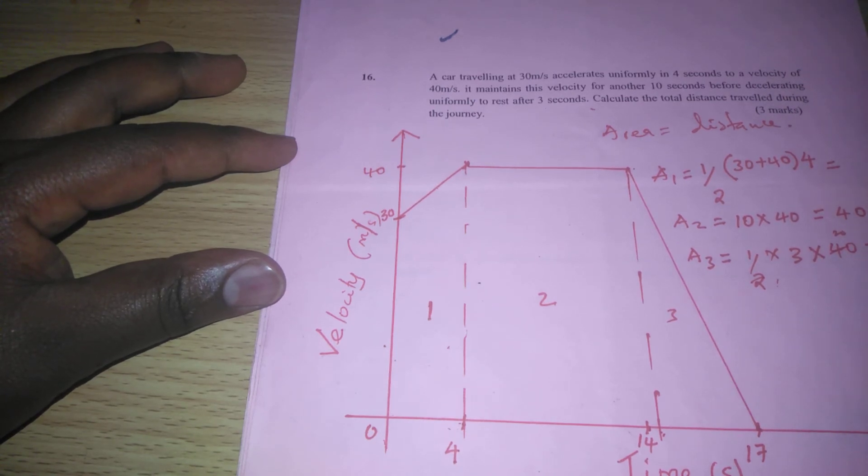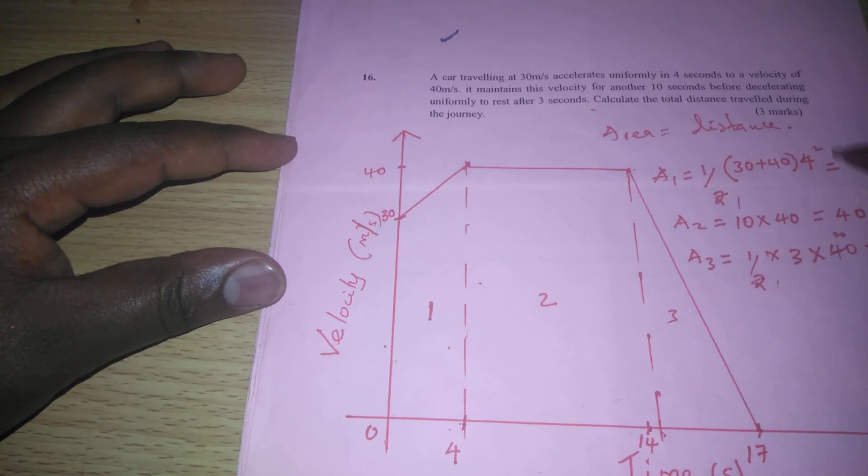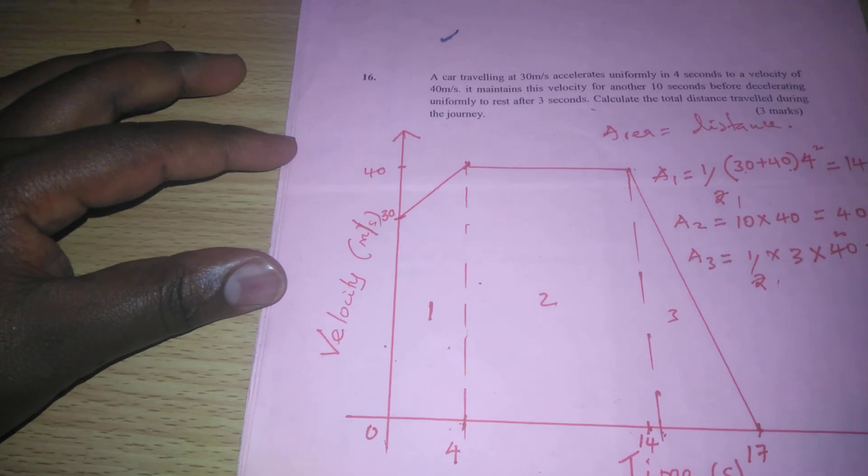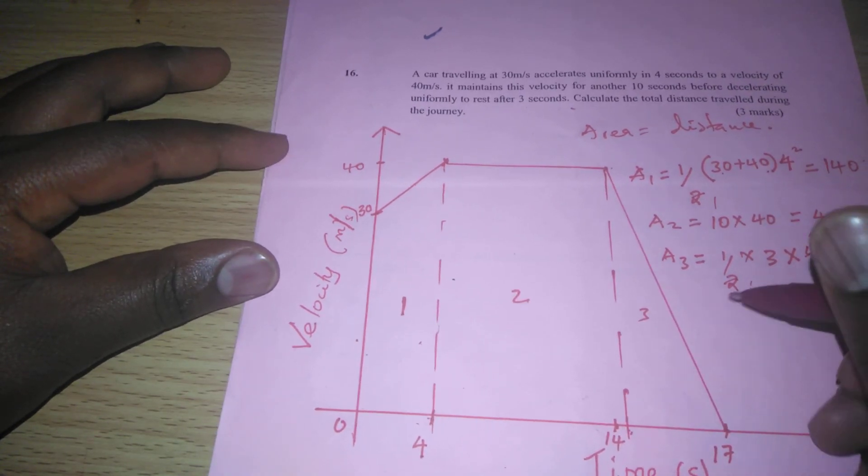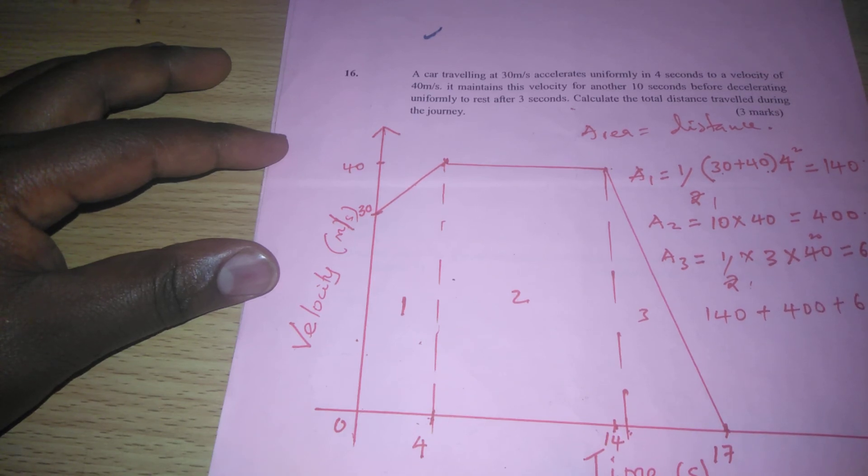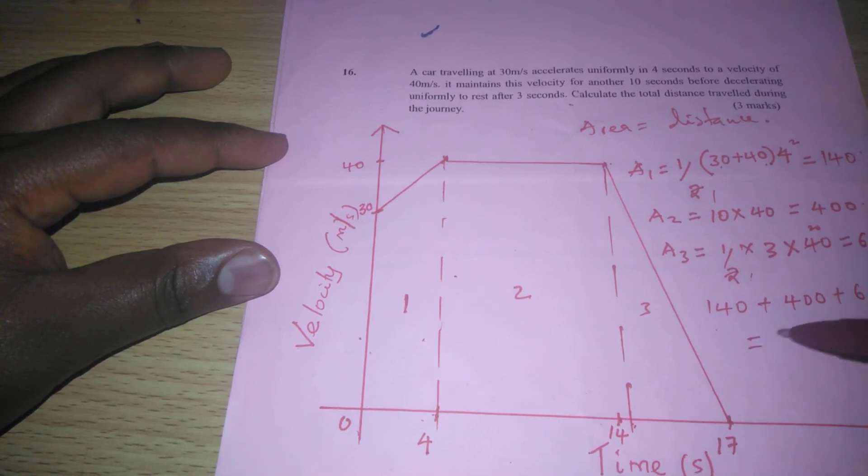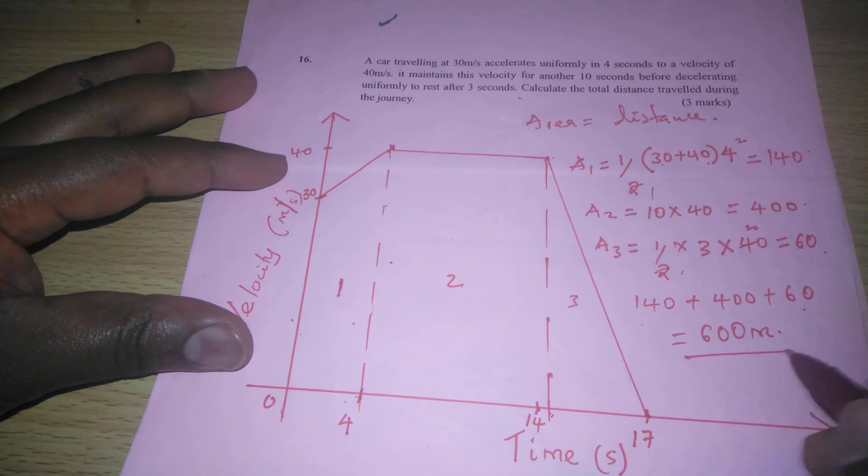These are 60, 400. On this side, we can have by 2, 1 and by 2, 2, such that this is 70 times 2, 140. The total distance traveled by this car will be 140 plus 400 plus 60. This gives us 600 meters. The total distance traveled is 600 meters.